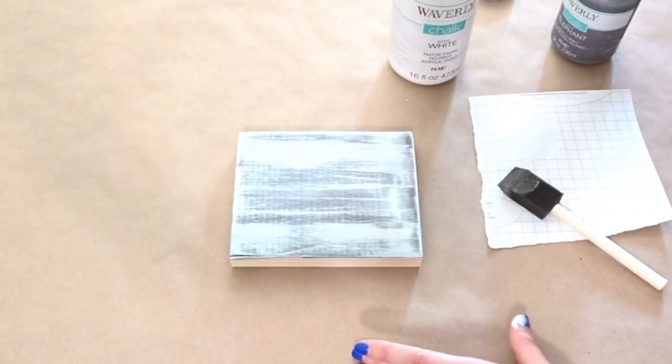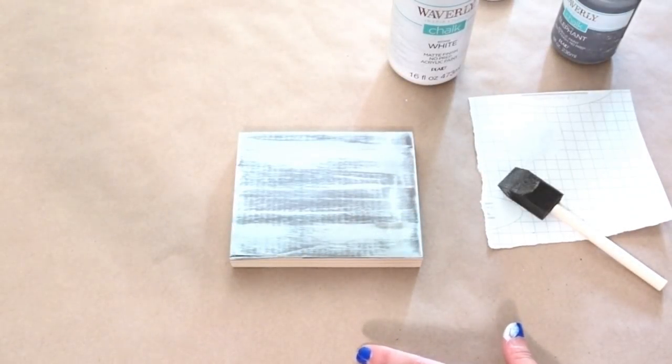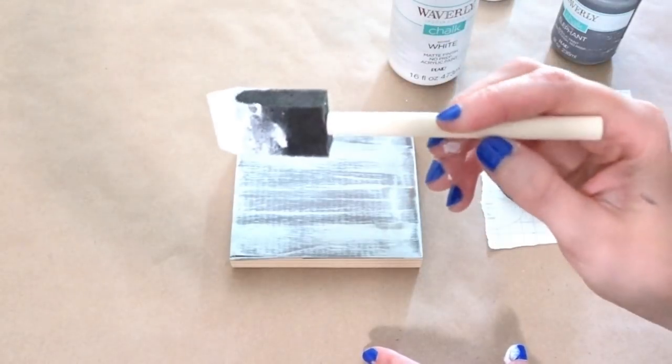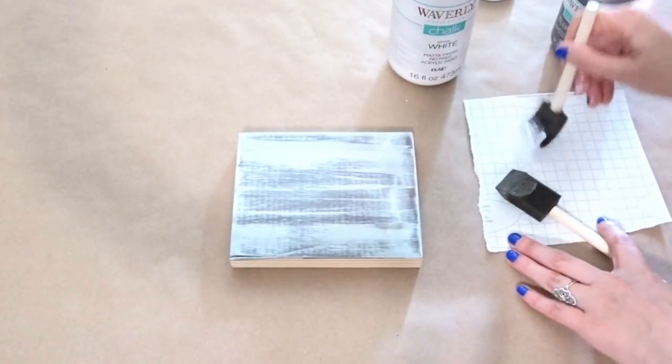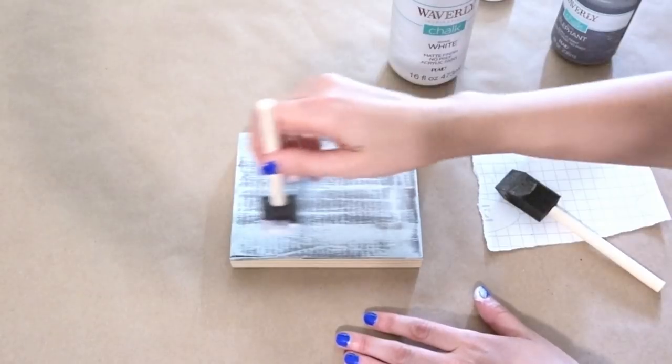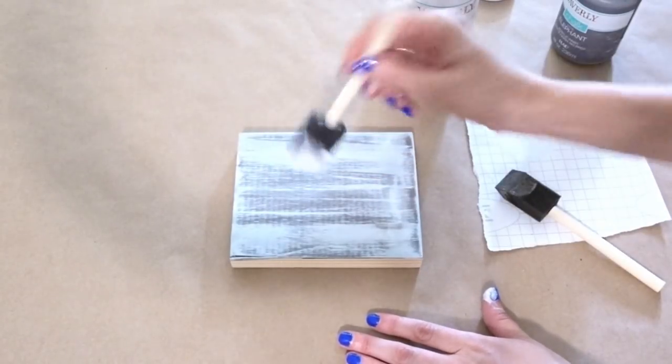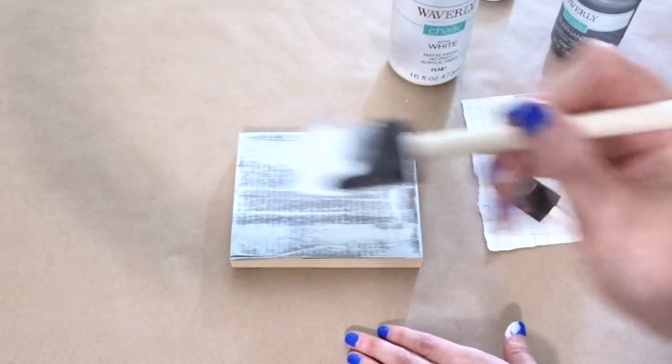All right. So now that this second layer has dried, I'm going to come back in with some more paint. Same thing. So I just put a little bit on my paint brush, dab it off. And now this coat, I'm actually going to use it and run it the thin side. Instead of laying it flat, I'm going to turn it on its side.